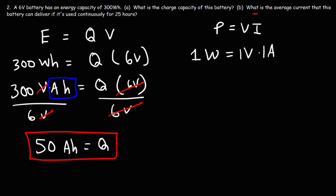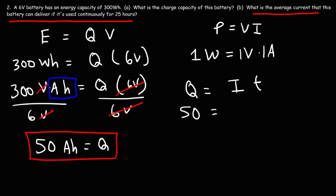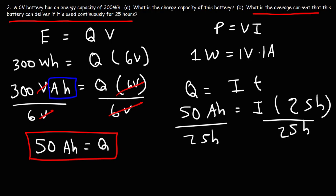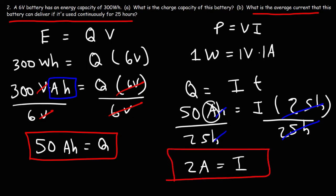Part B: What is the average current if this battery is used continuously for 25 hours? Charge equals current times time. We have 50 amp hours divided by 25 hours — the unit hours cancel — and 50 divided by 25 is 2. So we get an average current of 2 amps.